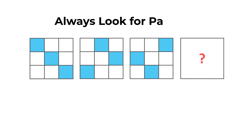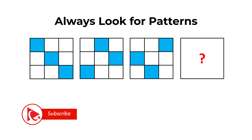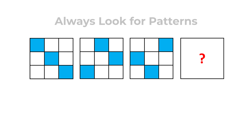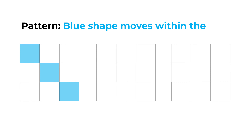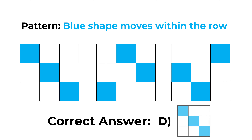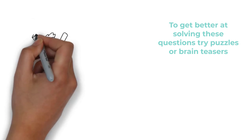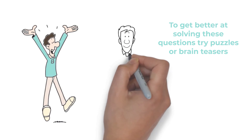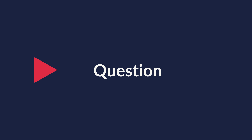As always, look for patterns — that's key to solving this. The blue shape moves within each row of the larger shape, moving from left to right one step at a time. Once the blue shape reaches the end of the row on the right, it reappears on the left. The correct answer is choice D.